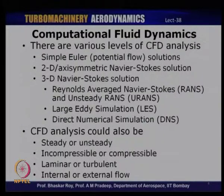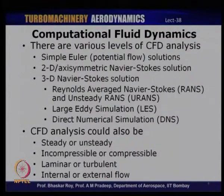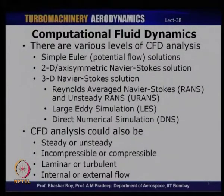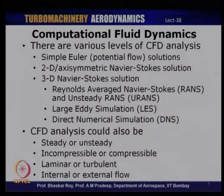DNS obviously requires a huge amount of memory and is directly a function of Reynolds number. Higher Reynolds numbers require more cells — DNS is proportional to Reynolds number squared. So for typical turbine or compressor flows at Reynolds numbers of 10^5 or 10^6, the number of nodes required is on the order of 10^10 to 10^12.